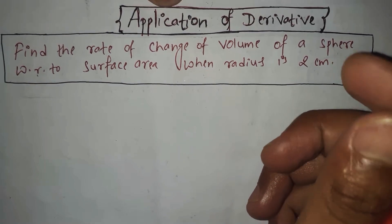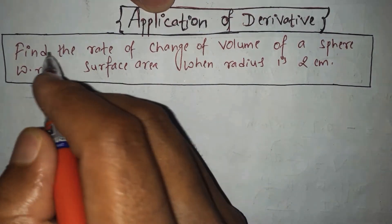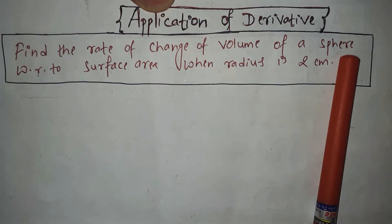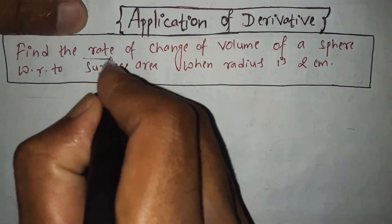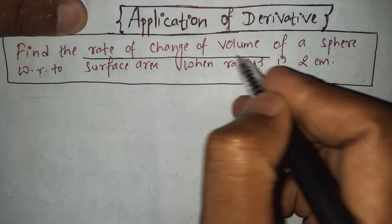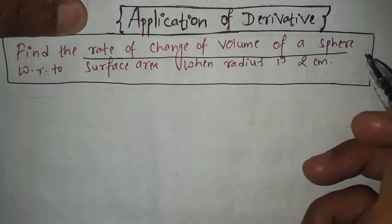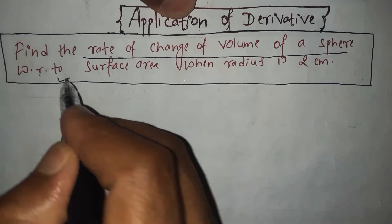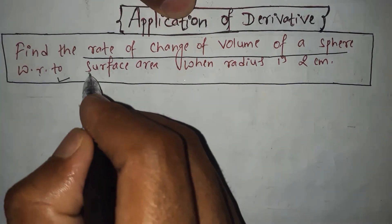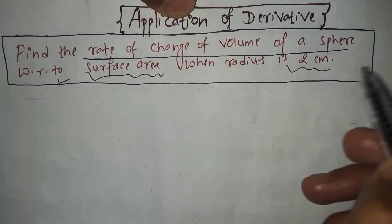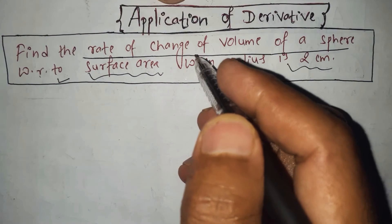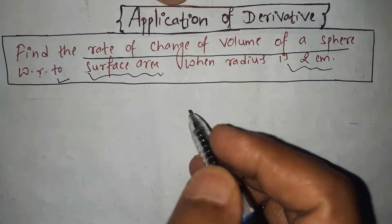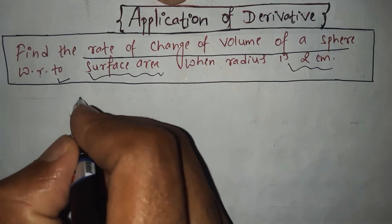Without wasting any further time, let's go ahead. The question is: find the rate of change of the volume of the sphere with respect to the surface area when the radius is 2 centimeters. Here we are going to calculate the rate of change of volume of the sphere with respect to the surface area.